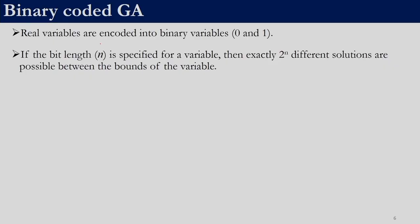Real variables are to be encoded into binary variables 0 and 1. For each real variable we will have to fix the bit length. If we specify the bit length n, then we can have 2^n different solutions. For example, if the bit length is 3, that means our string length is 3. With these 3 digits we can generate all combinations: 000, 001, 010, 100, 011, and so on. Like this there will be 2^n different solutions.